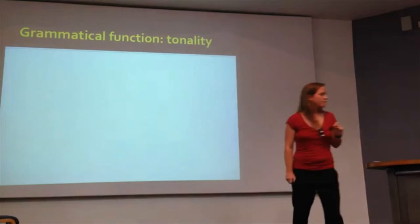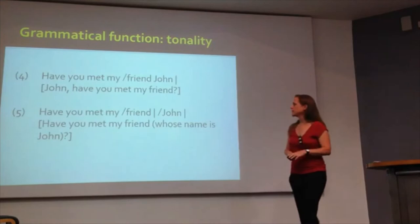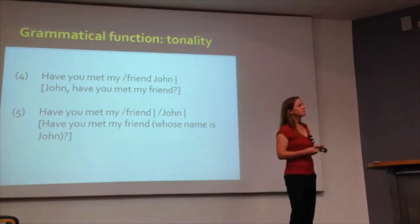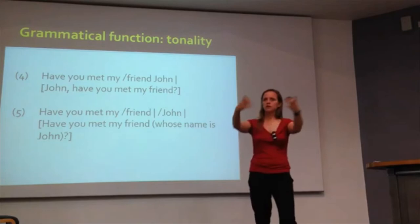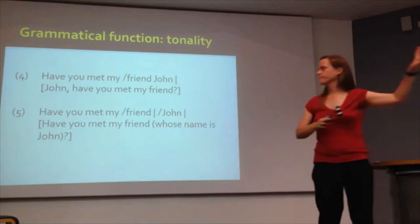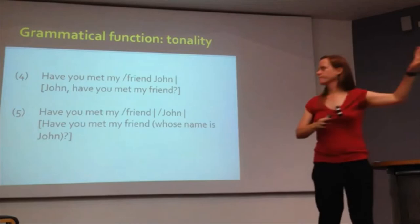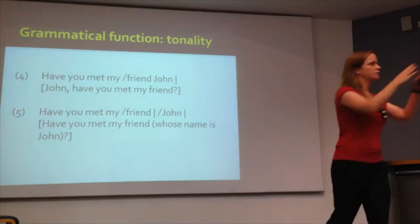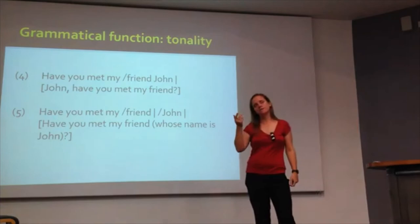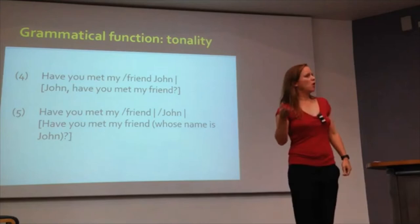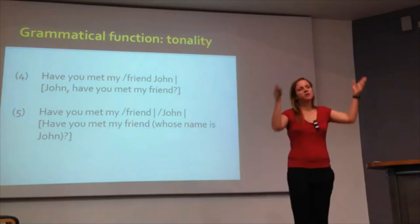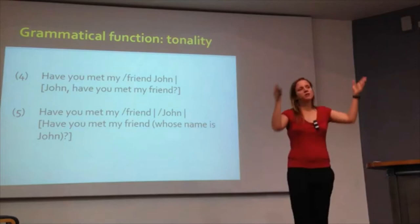Here's an example from the handbook. We have two utterances with the same words in the same order. First: 'Have you met my friend, John?' — said as one intonational phrase — means I am addressing you, John, and asking if you've met my friend, whose name we don't know. Change the intonation pattern and break it into two intonational phrases: 'Have you met my friend... John?' — and now we know the friend's name is John. The message changes depending on how you break it up into different IPs.